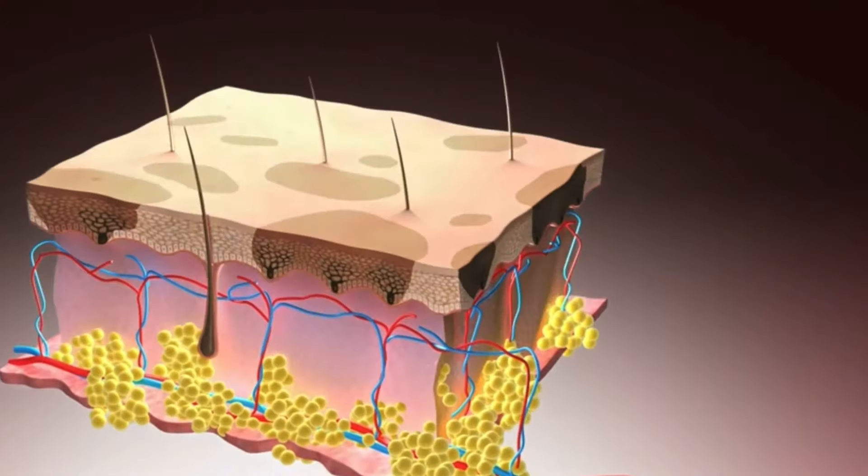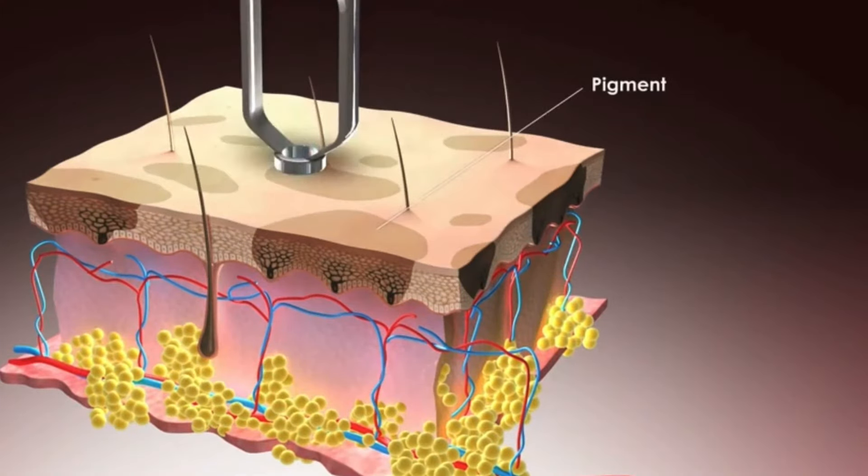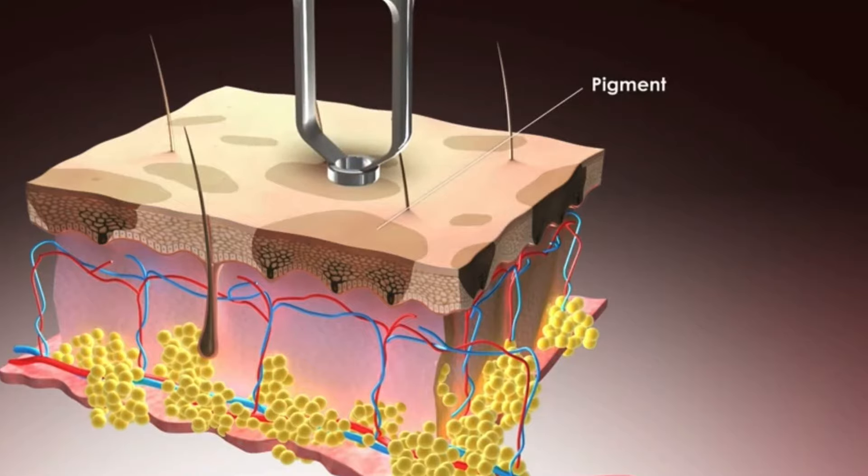In close-up, we can see the pigmented areas are caused by excess melanin deposited in the skin cells, and we can treat these areas selectively with long pulsed laser energy.